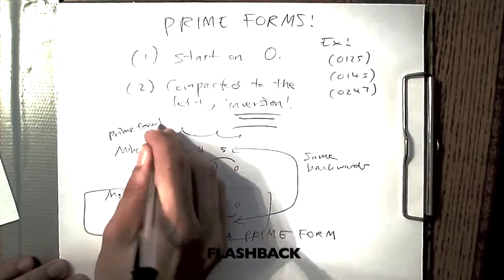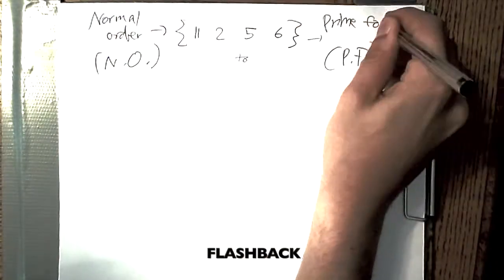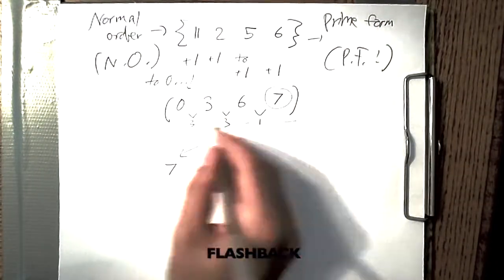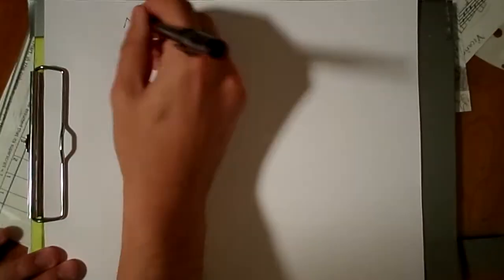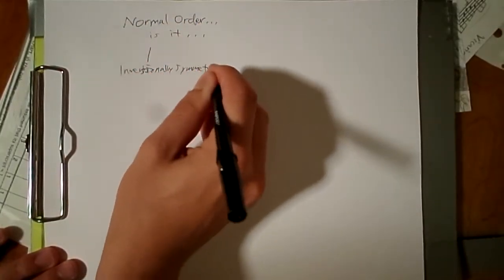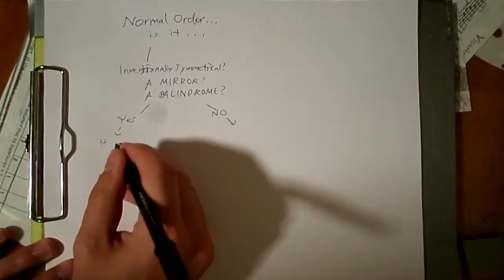When using L, M, and S, ignoring cycle, the only difference between normal order and prime form is the inversion. A normal order, if its inversion is more compacted to the left, creates a prime form, which means the inversion is a possibility.